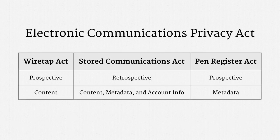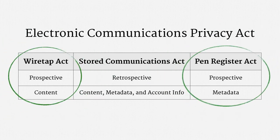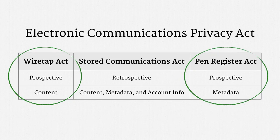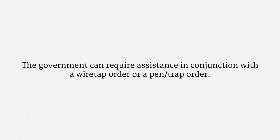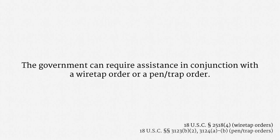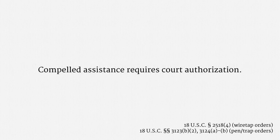I hope you recall that there are three parts to ECPA. The parts that regulate prospective surveillance — that is, the Wiretap Act and the Pen Register Act — have provisions that expressly authorize compelled assistance. Since the drafting of those provisions is very similar, I'm going to lump them together. The government can require assistance in conjunction with a wiretap order or a pen trap order. In either case, compelled assistance requires court authorization. A request just from law enforcement isn't enough.